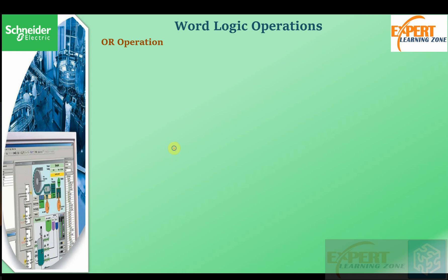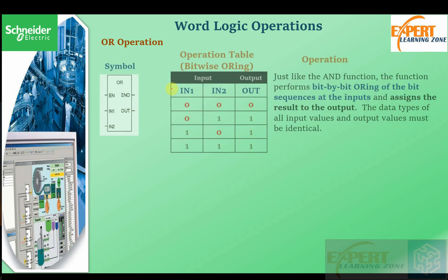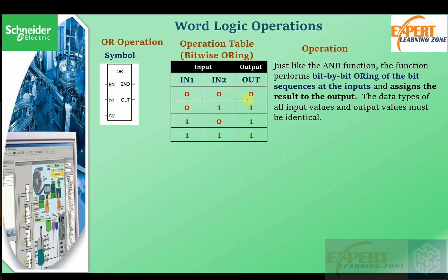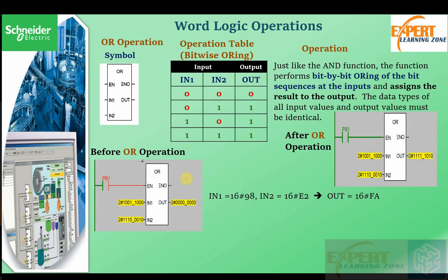Now let's talk about the OR operation. The OR operation performs a bit-by-bit OR on the two inputs and assigns the result to the output. With the OR operation, the output is 1 if and only if one or both of the inputs is at state 1. For example: 0 OR 0 is 0, 0 OR 1 is 1, 1 OR 0 is 1, and 1 OR 1 is 1.